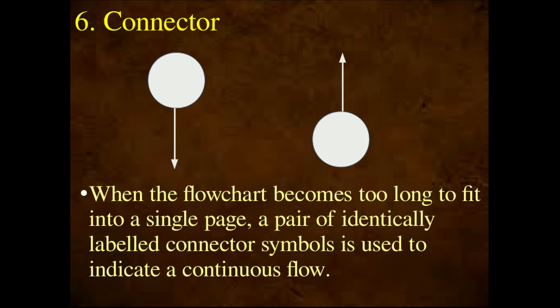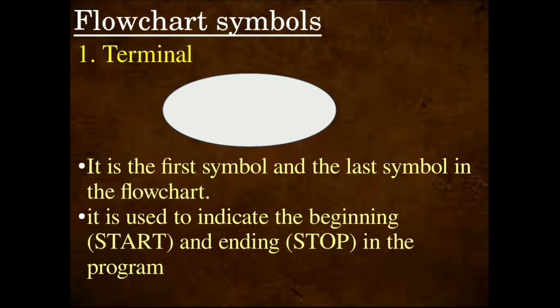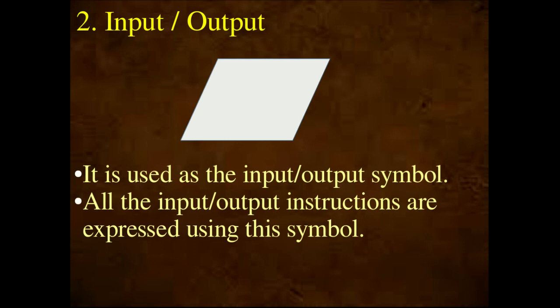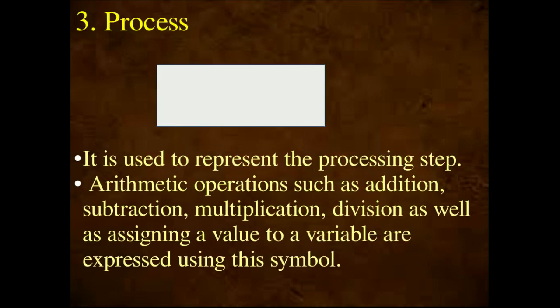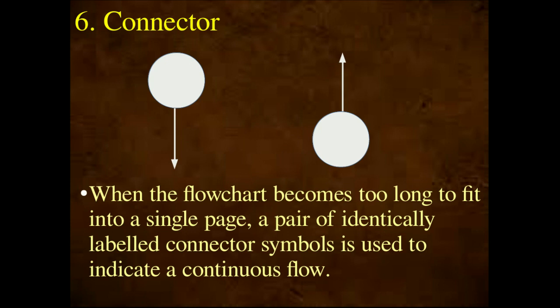Summary of flowchart symbols: the first symbol is the terminal symbol — oval shape — used to indicate Start and Stop of an algorithm. Input and output are represented by the rhombus symbol. Processing uses the rectangular box. Decision uses the diamond shape. Flow lines are the arrow-headed lines. Connectors are used when breaking across pages.